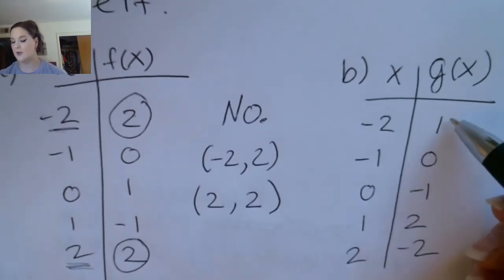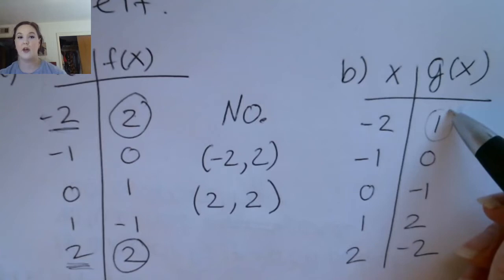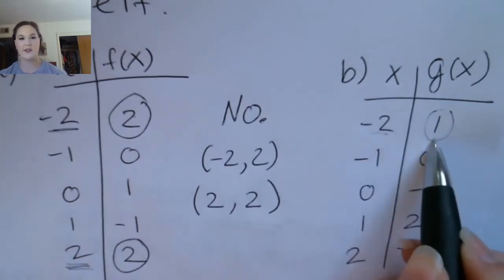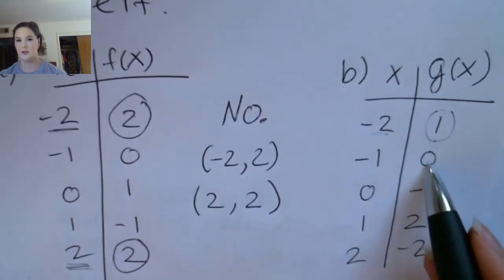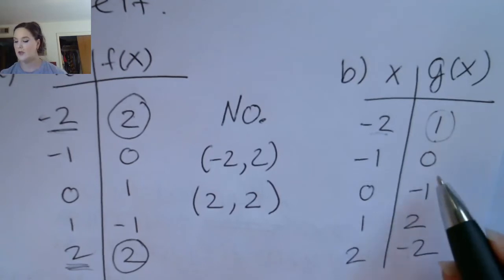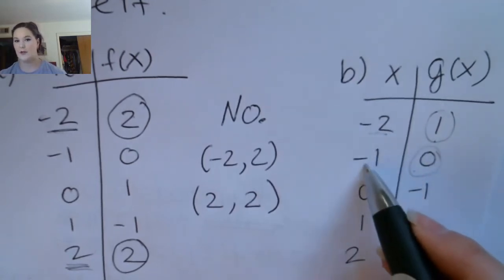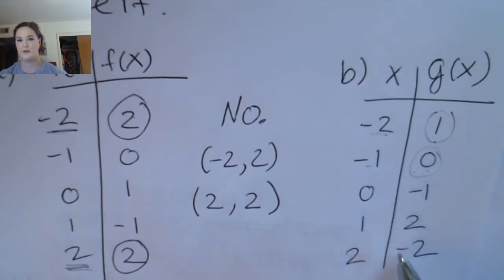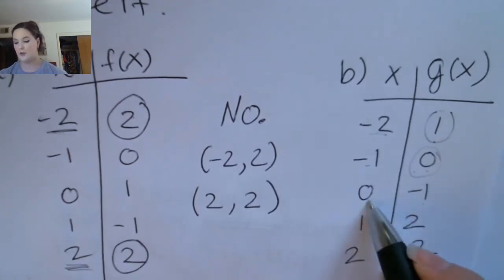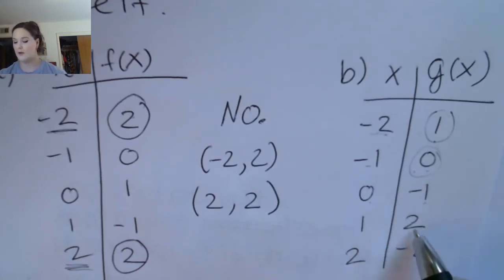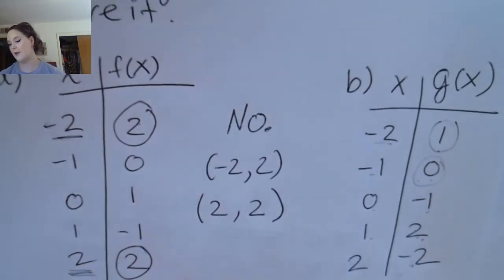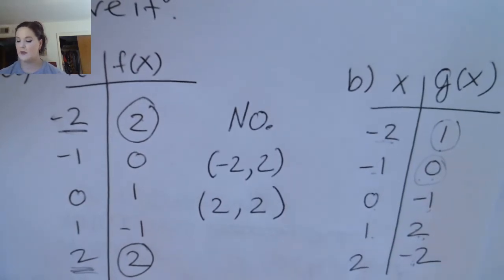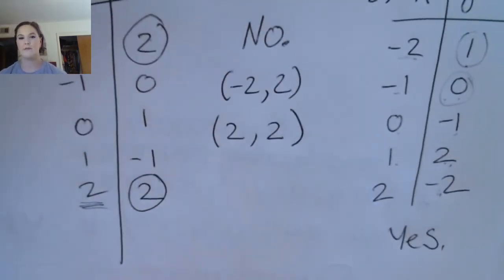If we look at the next table, we check: is there another input besides negative two that leads to output value one? No. All these inputs — none of them lead to one. For zero, negative one leads to zero, but anything else? No. For negative one, there's only one input that leads to that answer. For two, there's only one input, and for negative two, there's only one input leading to that output. So we would say yes, this function is one-to-one.